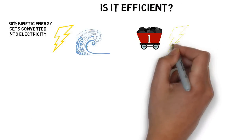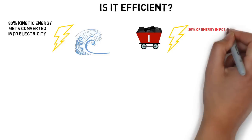80% of the kinetic energy from tides gets converted into electrical energy, whereas 30% of the energy stored within fossil fuels, such as coal and oil, gets converted into electrical energy.